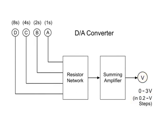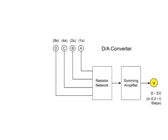Consider the possible binary inputs at D, C, B, and A, and the corresponding voltage output based on the following truth table.